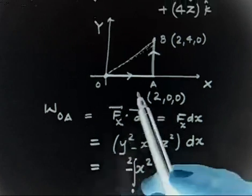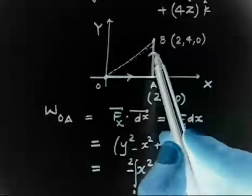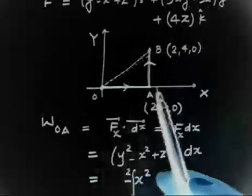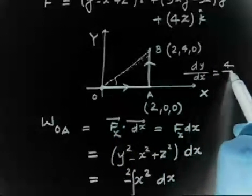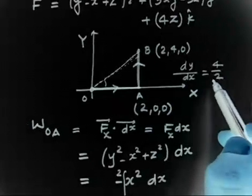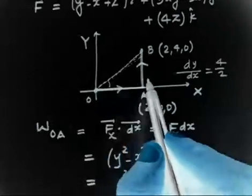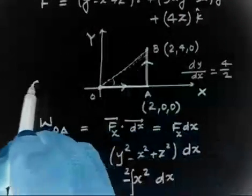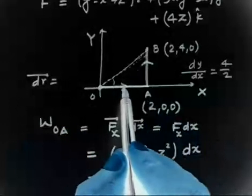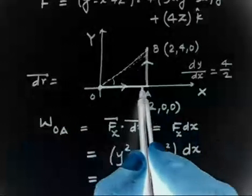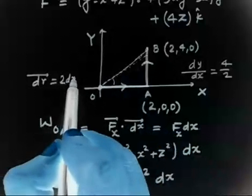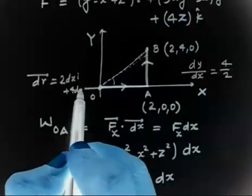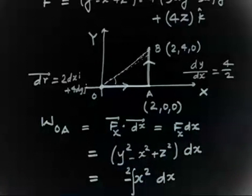For the direct path OB, tan θ = dy/dx = 4/2, so dy = 2dx. The displacement vector dr can be written as dx î + 2dx ĵ, since you go 2 units in x and 4 units in y. Using this dr, you can find the total work done along the direct path OB and compare it to verify whether the field is conservative.